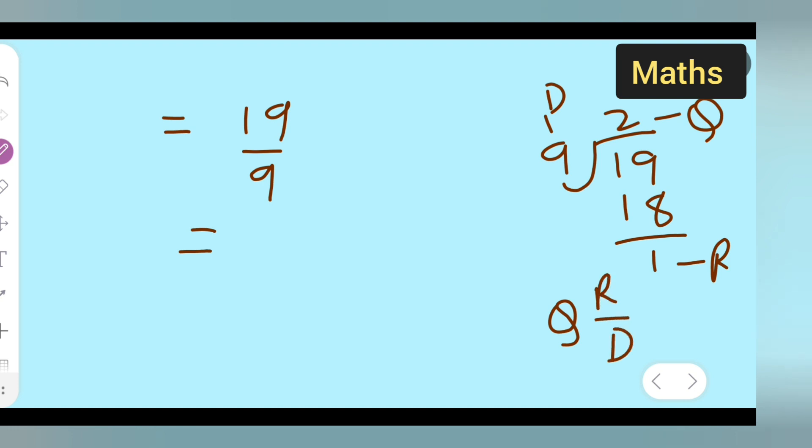So, my Q is what? Q is nothing but 2. And my R is here 1 upon 9. See, you all can see the quotient. Quotient is nothing but 2. Then here it is remainder. Remainder is 1 upon D is there. D is nothing but 9. So, you all have to bring it into a mixed fraction form.